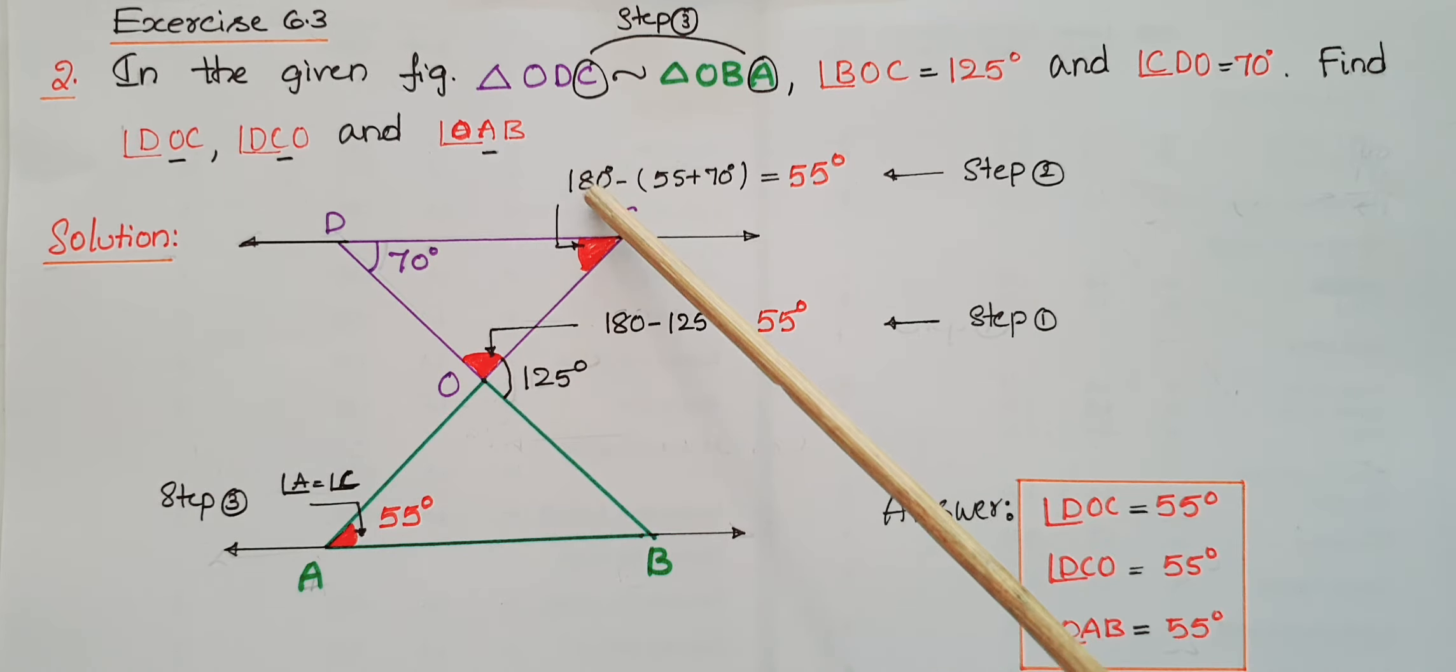This angle we can find: 180 minus the sum of these two angles, 70 plus 55, that is 55 degrees. So this angle is 55 and this angle is also 55. Then you have to calculate this angle.